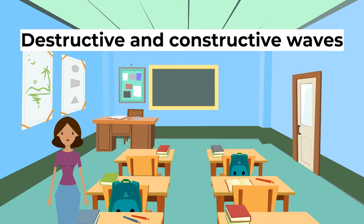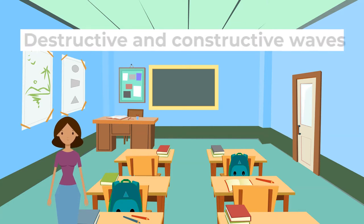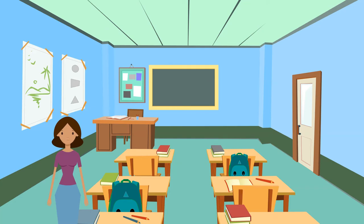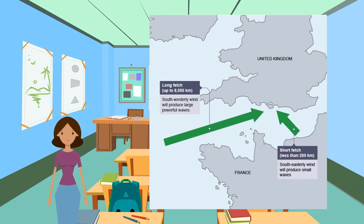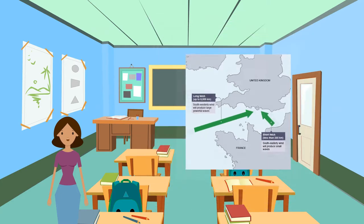The power of waves is one of the most significant forces of coastal change. Waves are created by wind blowing over the surface of the sea. As the wind blows over the sea, friction is created producing a swell in the water. The energy of the wind causes water particles to rotate inside the swell and this moves the wave forward. The size and energy of a wave is influenced by: